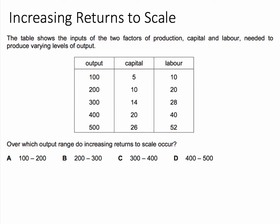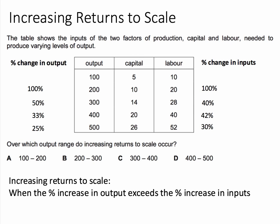This question is about increasing returns. What's happening is we're changing the inputs of production. I've done a quick calculation on the right hand side here — that's the percentage change in inputs for labour and capital. On the left hand side I'm going to do a calculation of percentage change in output. We can see output rising by 100%, then 50%, then 33%, then 25%.